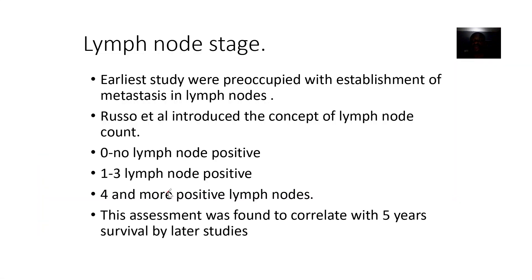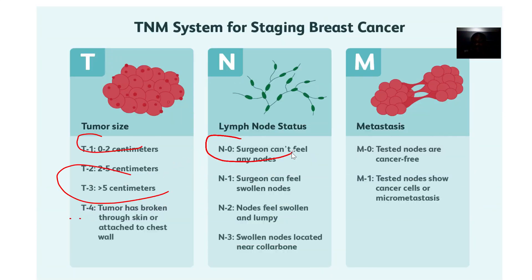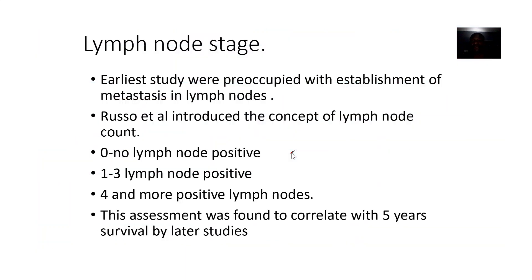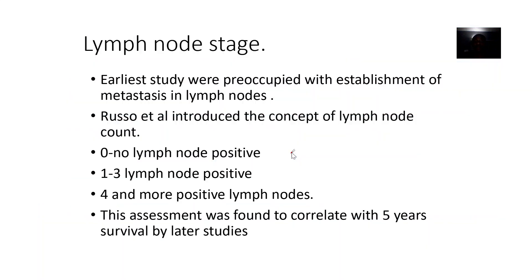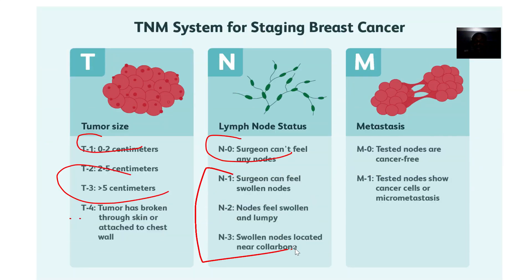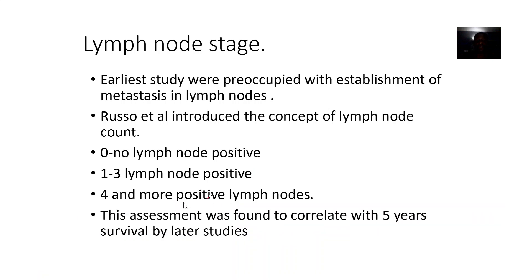For lymph nodes, studies were preoccupied with the establishment of metastasis in lymph nodes. If no lymph nodes are affected, that means N0. If one to three lymph nodes are affected, you're talking about N1. You can physically feel if the lymph nodes are swollen and lumpy. This is essentially the staging of lymph node involvement.